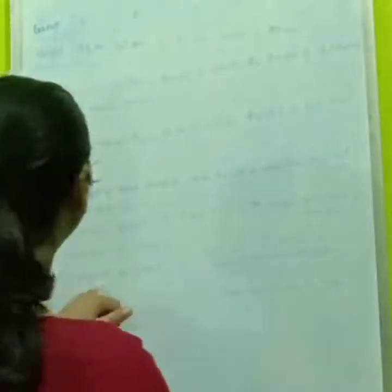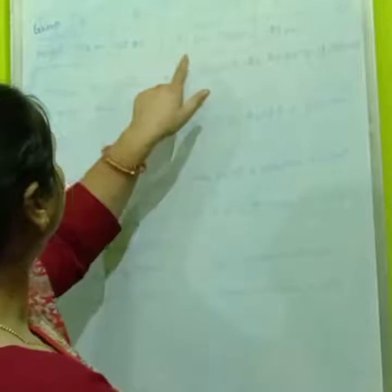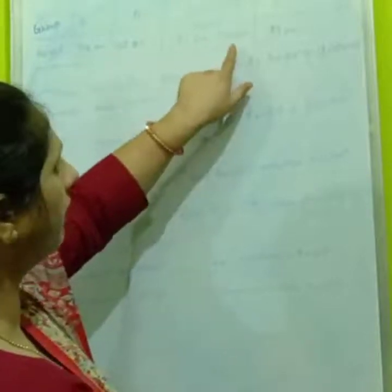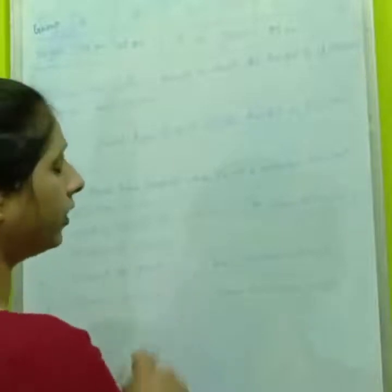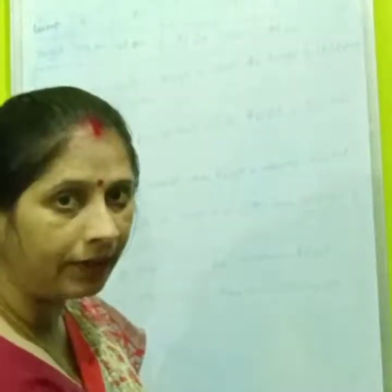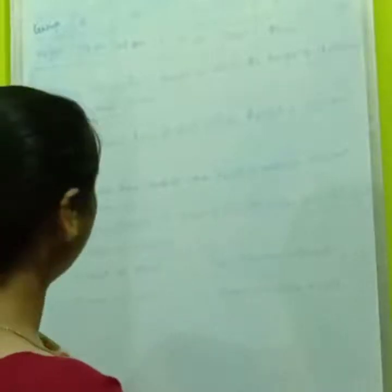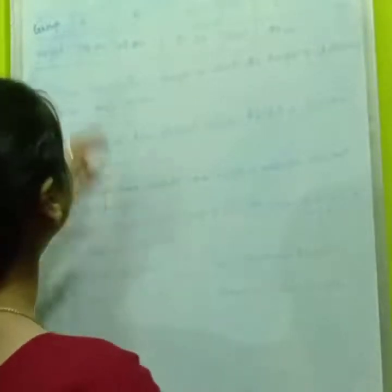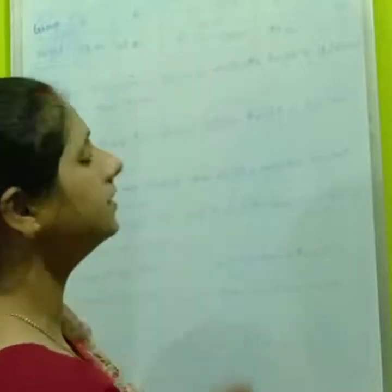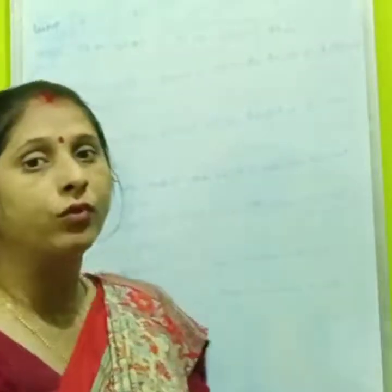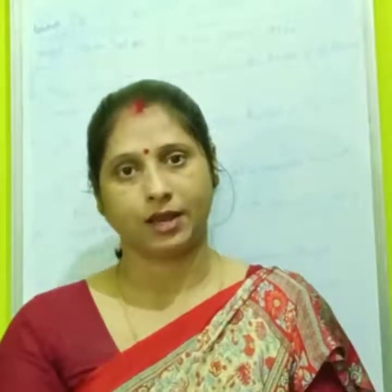Now question E: students of which group have maximum height? The maximum number is 110, which is group D. So the height of group D students is maximum. Now which group has minimum height? The minimum number is 96, so the height of group C students is minimum.